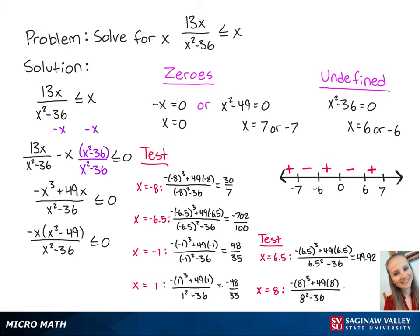For x equals 8, we have negative thirty-sevenths. Since this number is negative, this means that x values greater than 7 will make the left side of the inequality negative. To make the inequality a true statement, the left side must be less than or equal to 0.